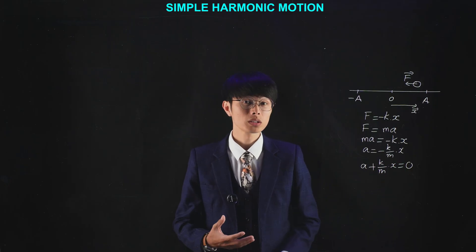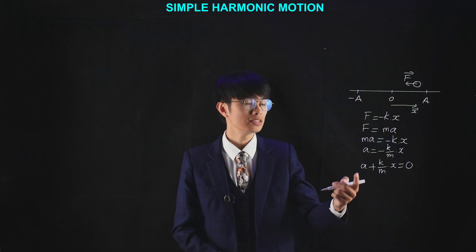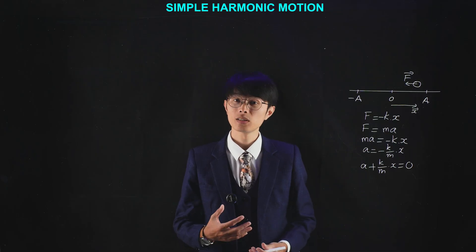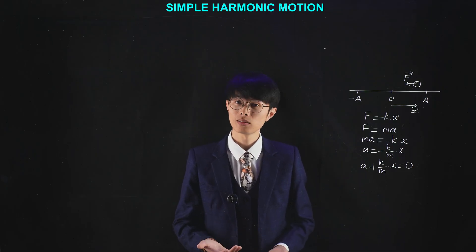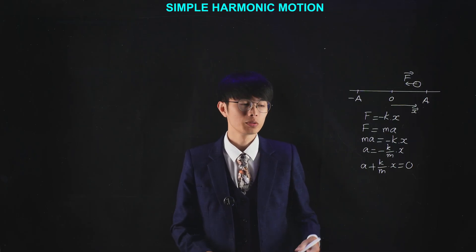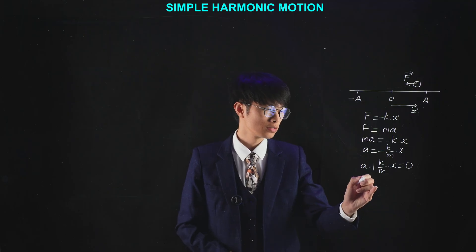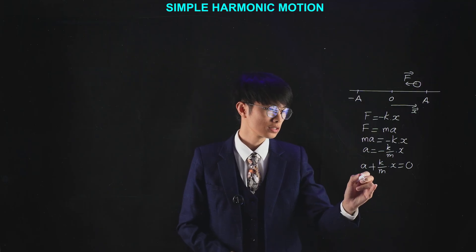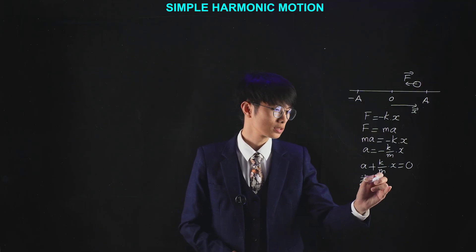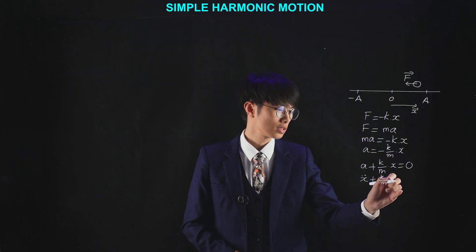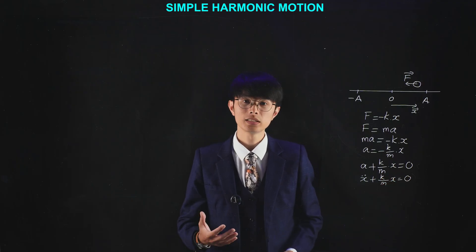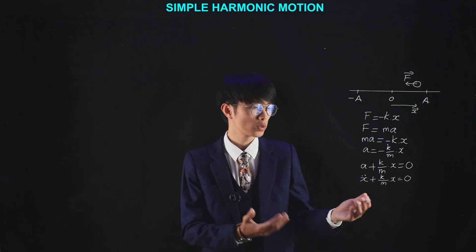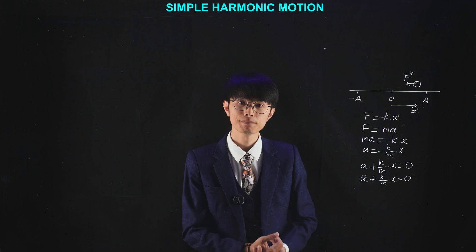We also know that the acceleration is the second derivative of position with respect to time. So we can write: the second derivative of x plus k over m times x equals zero. And this is the equation for simple harmonic motion.